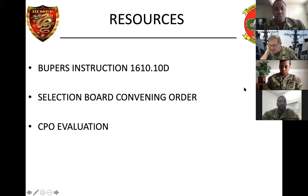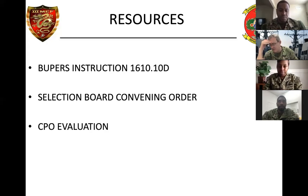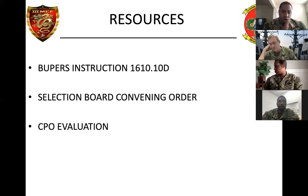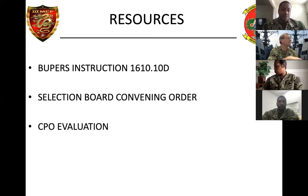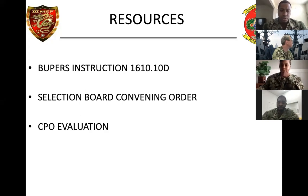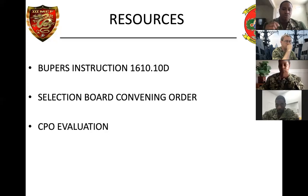Another resource is the selection board convening order. For those of you that are up for chief, this is very important to you. This tells the master chiefs what to look for when they sit down at that board and go through all of your evaluations. As a first class petty officer, if you have not seen a convening order, I challenge you — go to the Navy NPC website, go under enlisted boards, click on CPO, SCPO, or MCPO, and review it. That is your go-by.